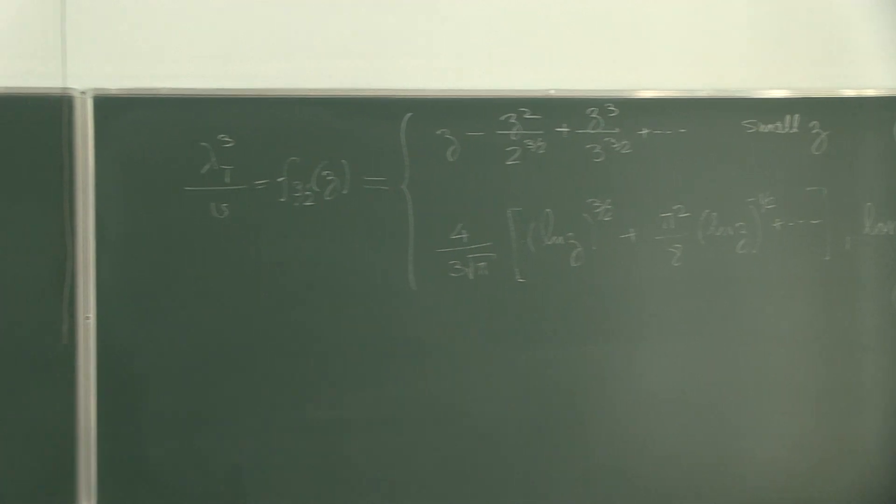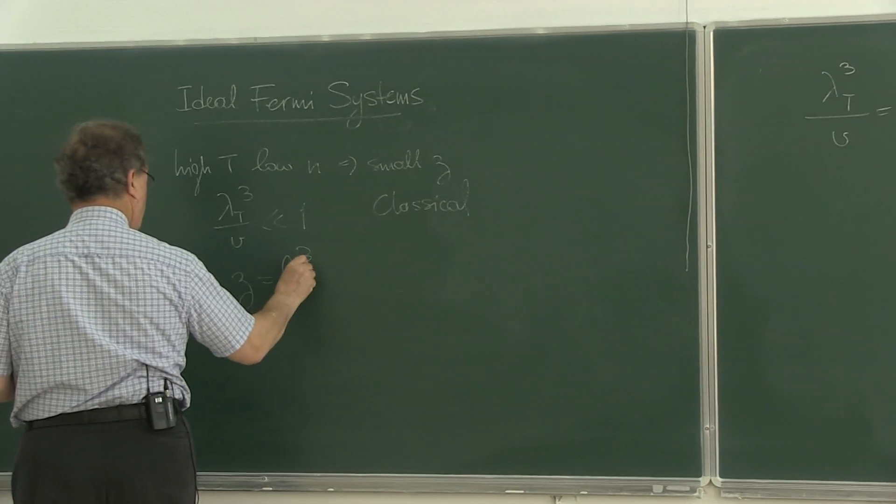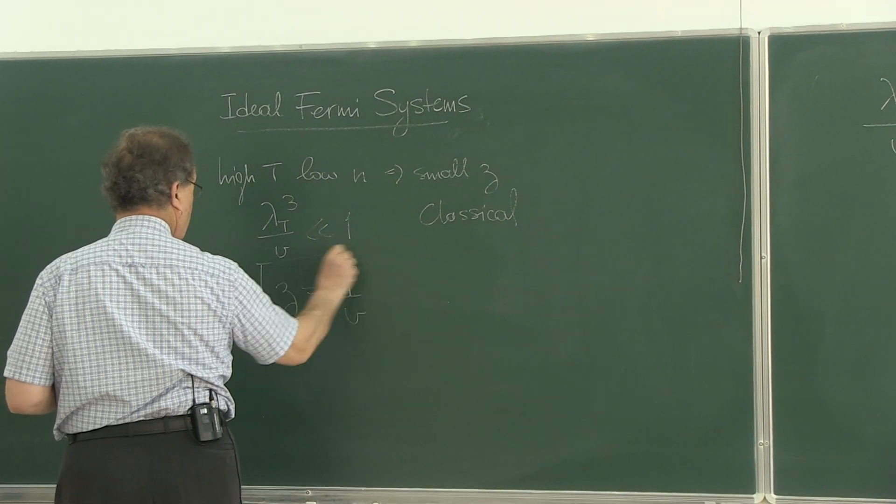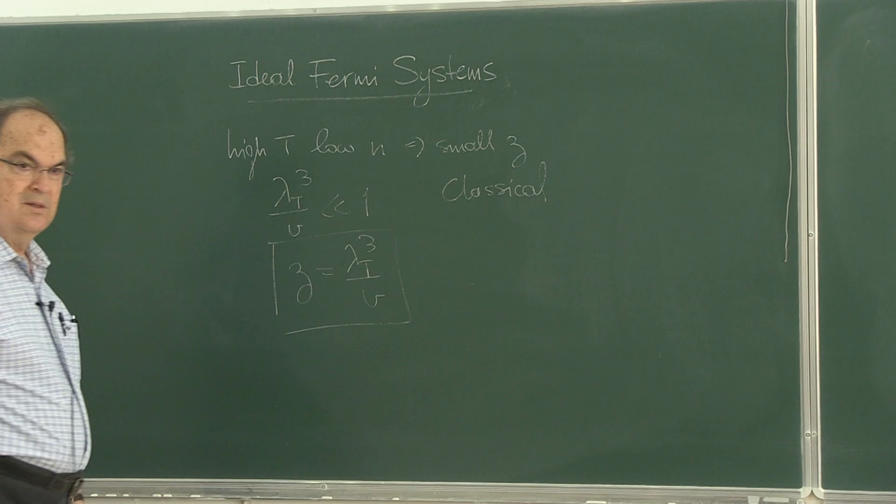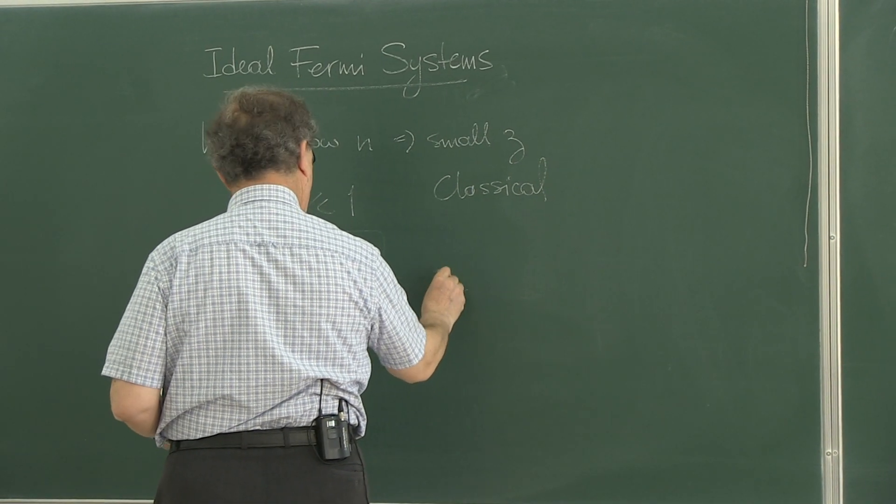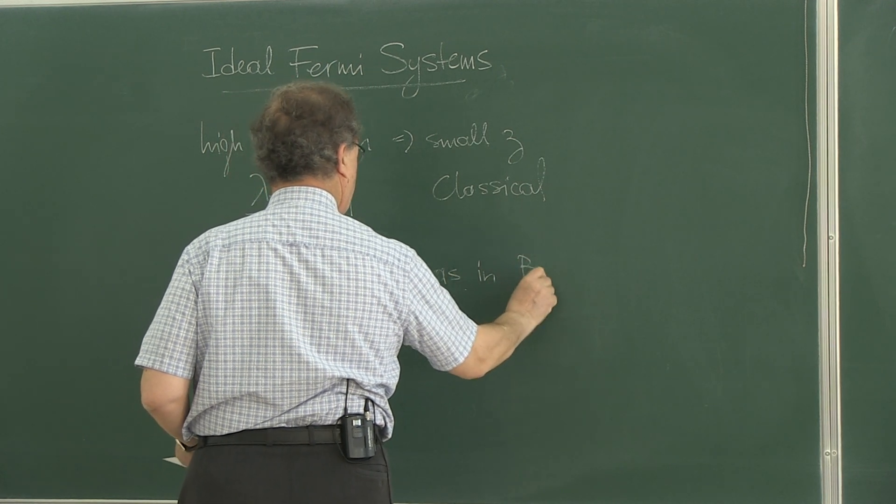In this limit, we find that z goes like lambda t cube over v. This is the Boltzmann case, isn't it? As in the Boltzmann case.